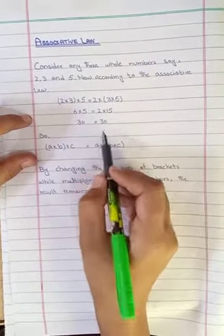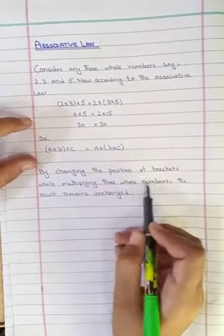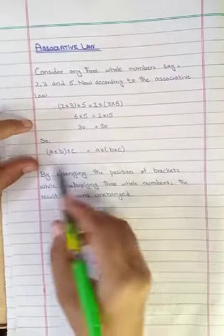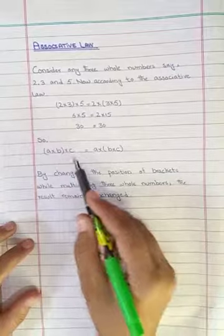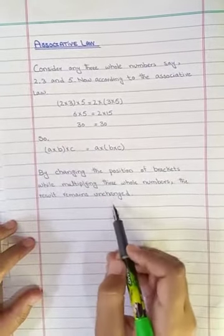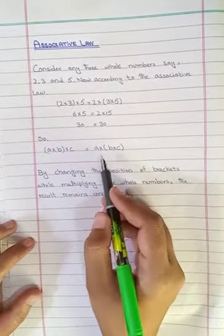Now we will multiply them on the left side, then the right side will be equal. By changing the position of the brackets, while we multiply the three whole numbers, the results remain unchanged. The result will never change. This is the associative law.